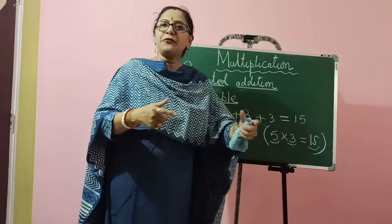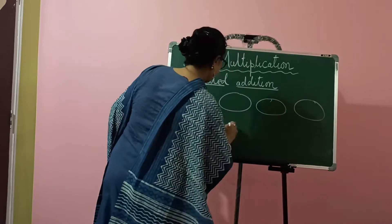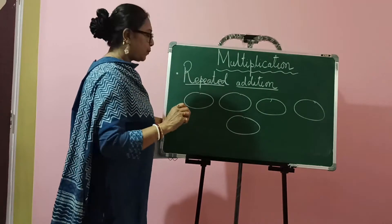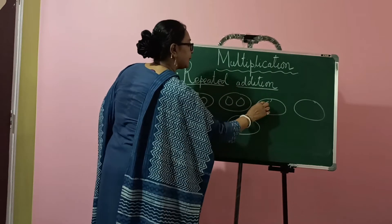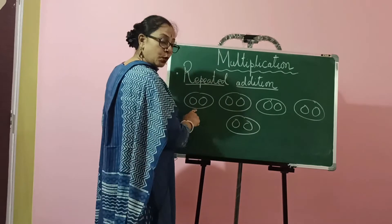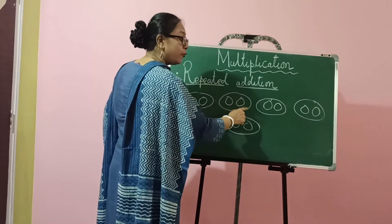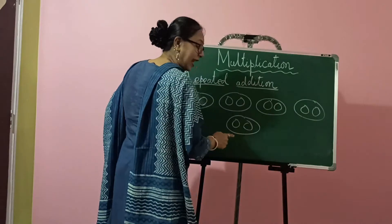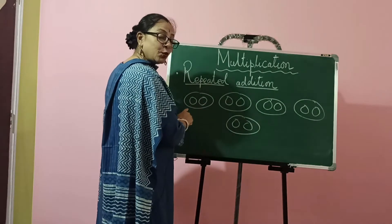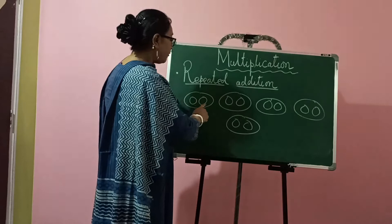Let us understand this in a different way in terms of groups. Say you have 5 plates, and in each plate I keep 2 eggs. Each plate has 2 eggs. So 2 plus 2 plus 2 plus 2 plus 2: 2 plus 2 is 4, 4 plus 2 is 6, 6 plus 2 is 8, and 8 plus 2 is 10. We have altogether 5 plates, and in each plate we have 2 eggs each.